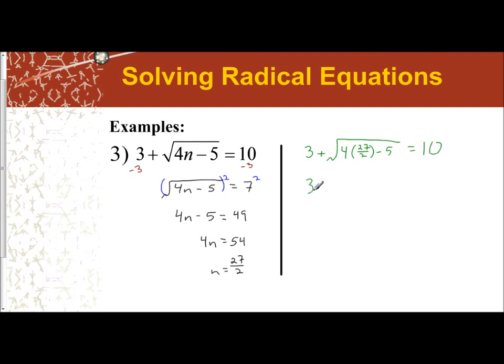So simplifying, I get 3 plus the square root of 4 times 27 halves is 54, so you get 54 minus 5, which 54 minus 5 is 49. The square root of 49 is 7, so 3 plus 7 equals 10.